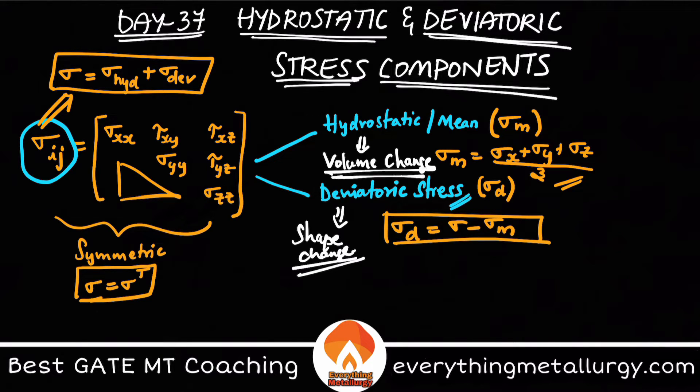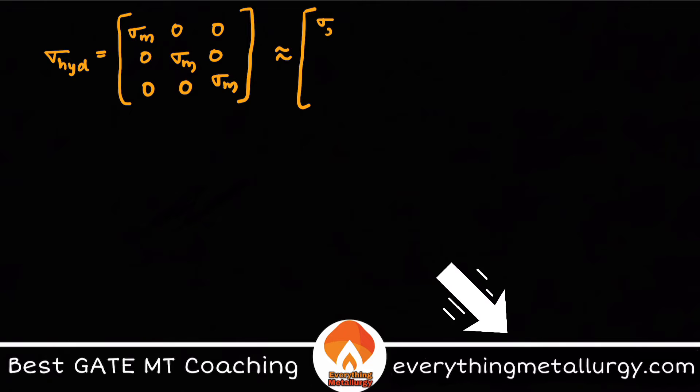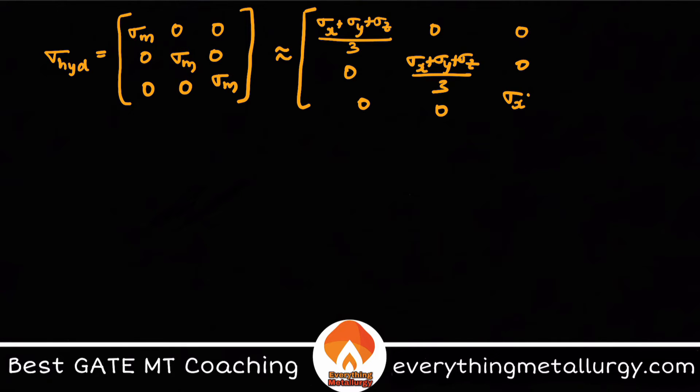Now, quickly, if you want to write in terms of matrices, my sigma m or sigma hydrostatic will be equal to sigma m zero zero, zero sigma m zero, and zero zero sigma m. This is what will be my hydrostatic stress tensor. If you want to write this, this will be sigma x plus sigma y plus sigma z by 3, zero zero, zero the same terms over here, and also here. This is how you basically represent the hydrostatic stress.